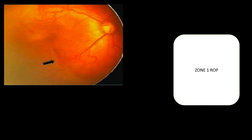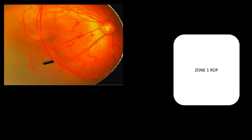Let us do some exercises. Can you identify which zone this ROP is in? You can see the avascular retina and the vascular retina with the junction between them. Looking at the optic disc and macula, the distance from optic disc to macula is x, so twice x gives the zone 1 radius. Drawing that circle, you can see this ROP lesion is mostly within zone 1 — so this is zone 1 ROP.